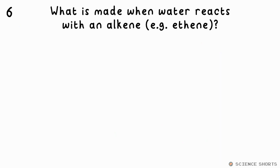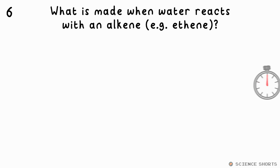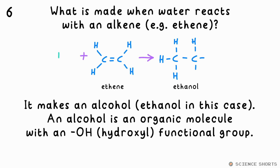What happens when water reacts with an alkene? It makes an alcohol. The H and OH from the water bond to the hydrocarbon to give that OH group — that's a hydroxyl functional group. If there's nothing else special going on nearby, that means it's an alcohol.